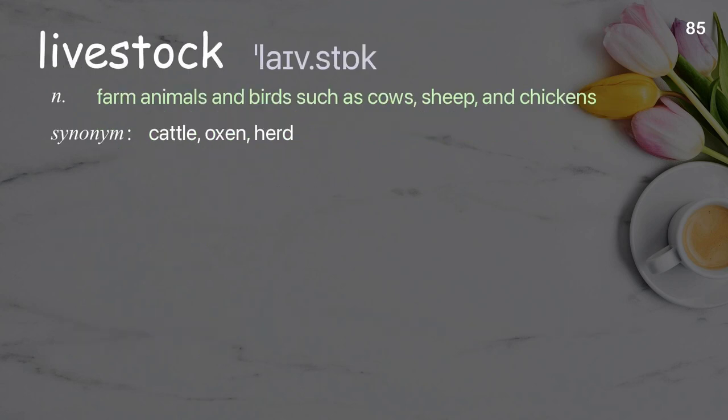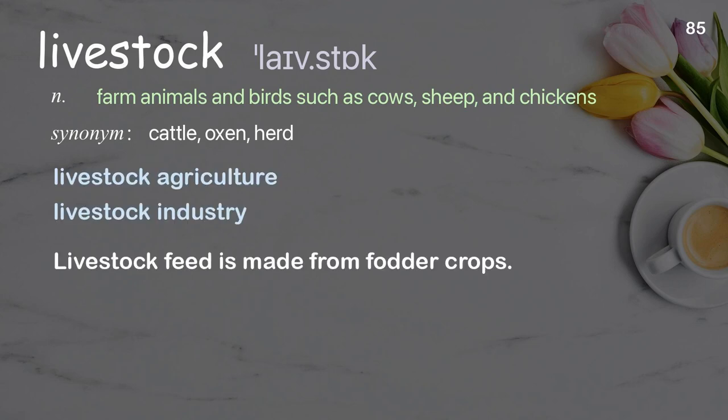Livestock: farm animals and birds such as cows, sheep, and chickens. Examples: livestock agriculture, livestock industry. Livestock feed is made from fodder crops.